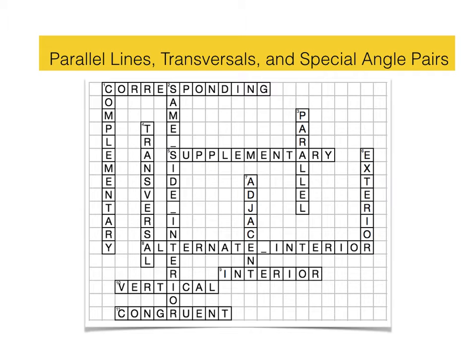In this lesson we'll consider special angle pairs that are formed by a pair of parallel lines and a transversal. The names of some of the angles we'll be considering are shown on this crossword.